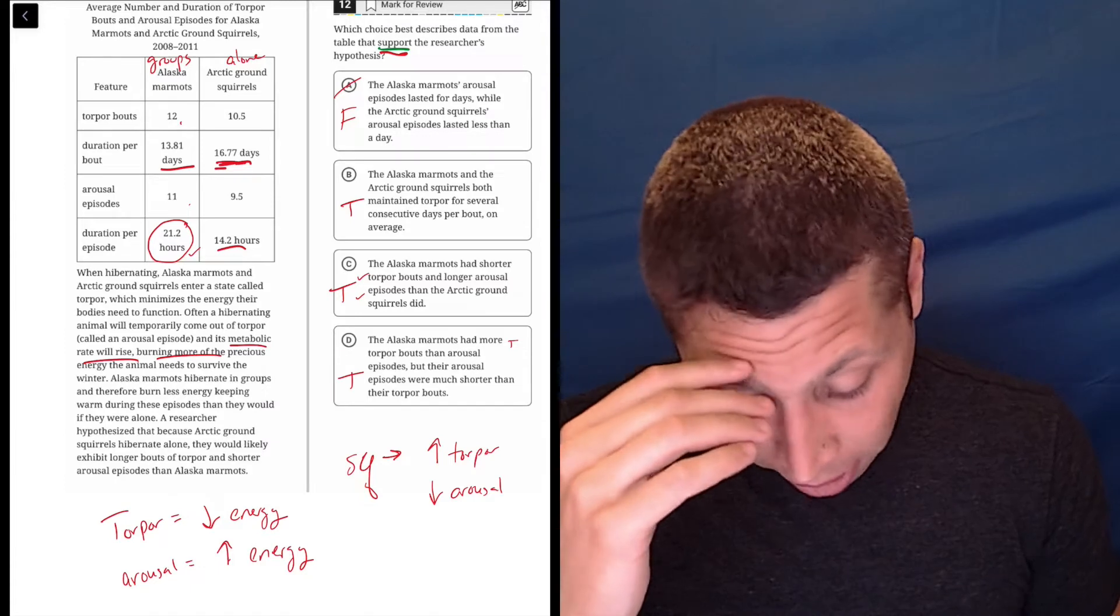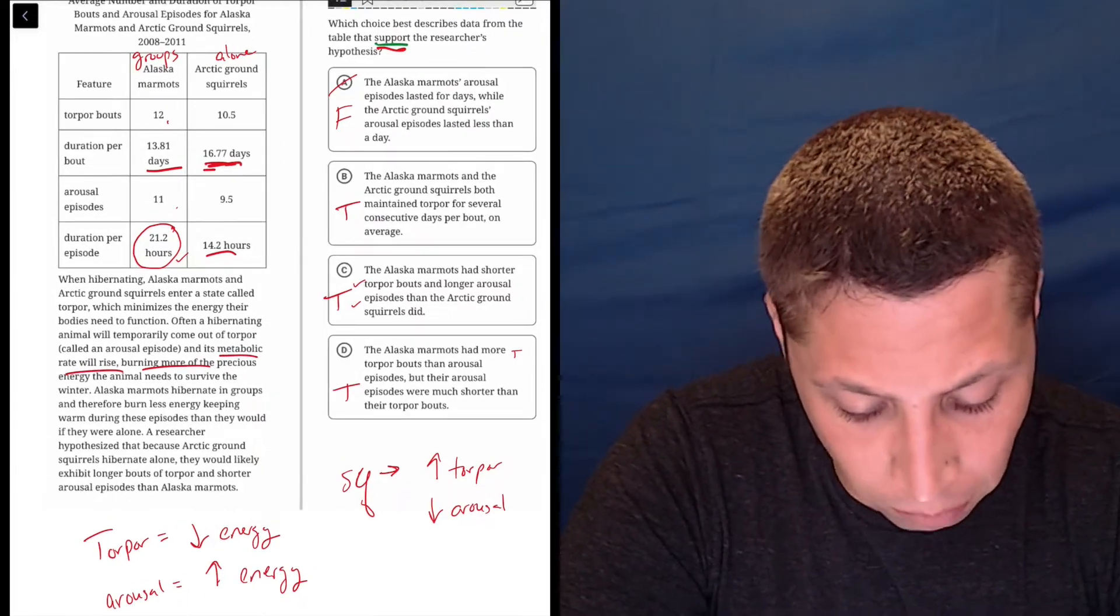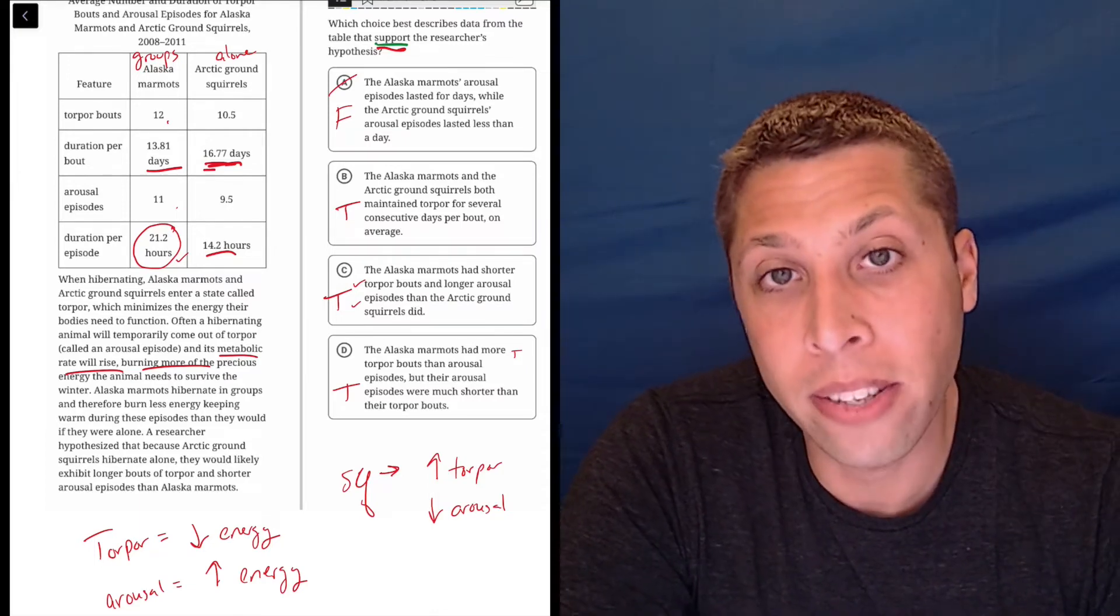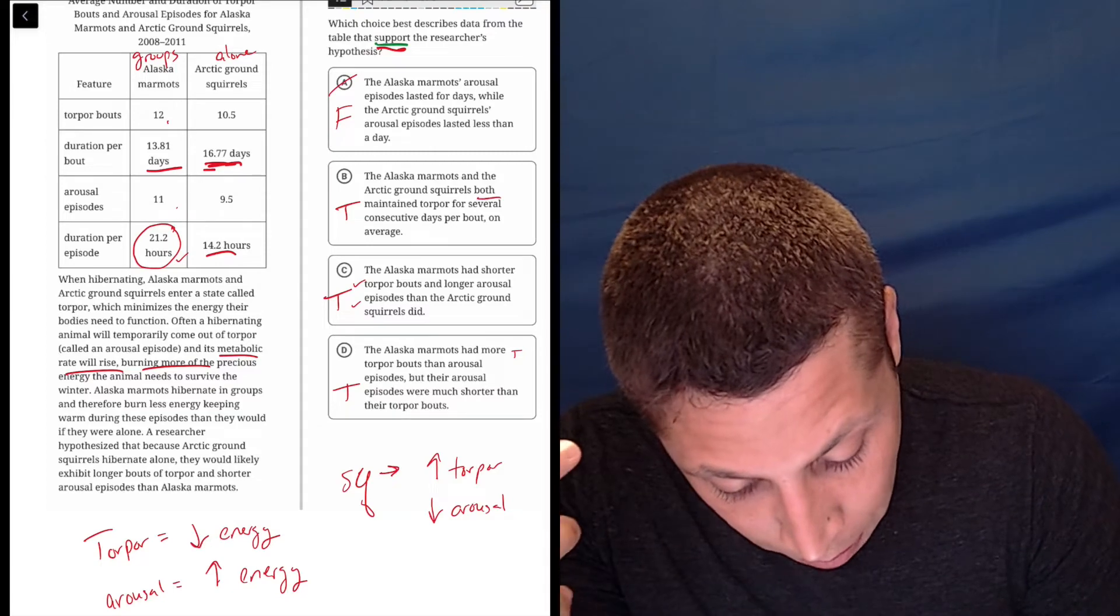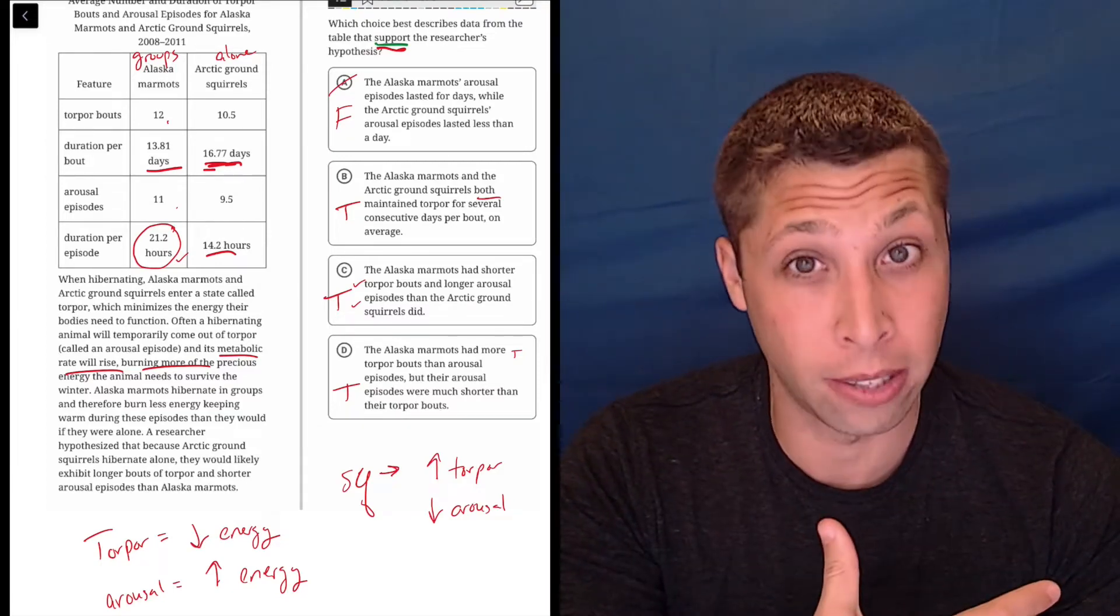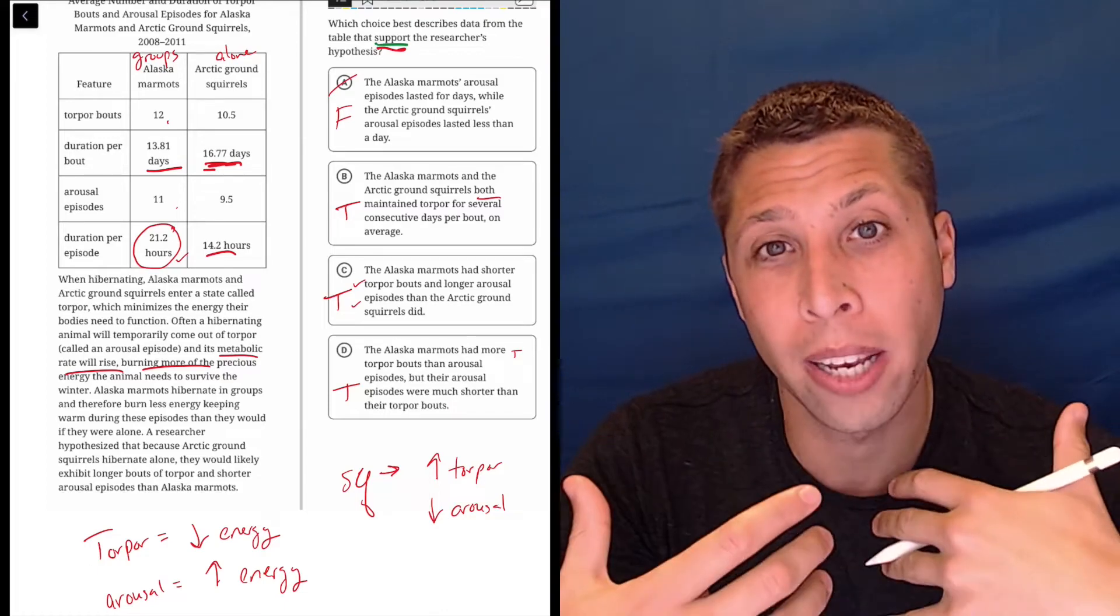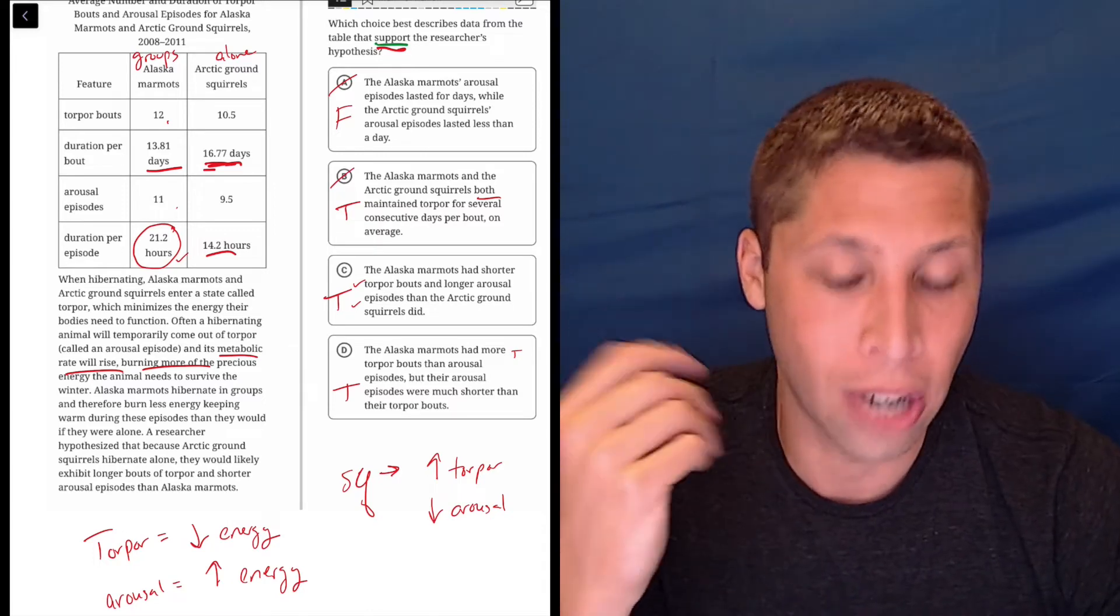So choice B, the Alaska marmots and the arctic ground squirrels both maintain torpor for several consecutive days per bout. Well, this is saying that they're the same, right? That word both is a same word. But we're trying to suggest in this hypothesis that these two animals are different in some way. So it's unlikely that we would want a choice that says that they're similar. So this is just not going to do the job.